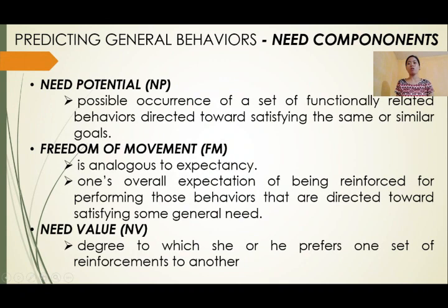There are three need components. First, need potential — the possible occurrences of a set of functionally related behaviors directed toward the satisfaction of similar goals. Second, freedom of movement — a person's overall expectation of being reinforced for performing behaviors directed toward satisfying some general need. Third, need value — the extent to which people prefer one set of reinforcements to another. These need components are analogous to the more specific concepts of behavioral potential, expectancy, and reinforcement value.